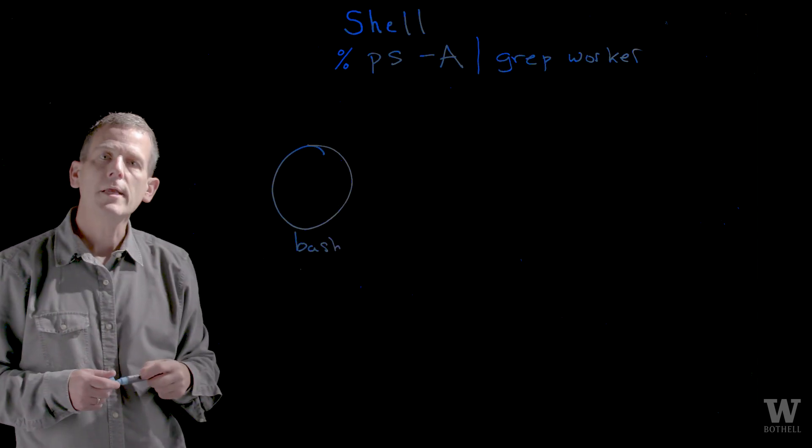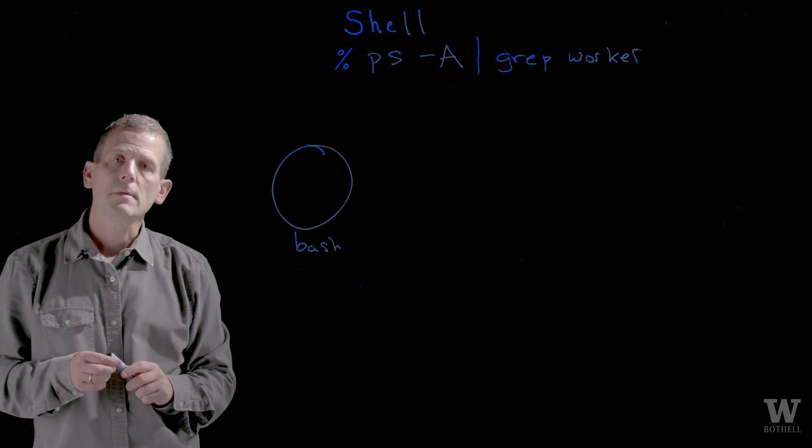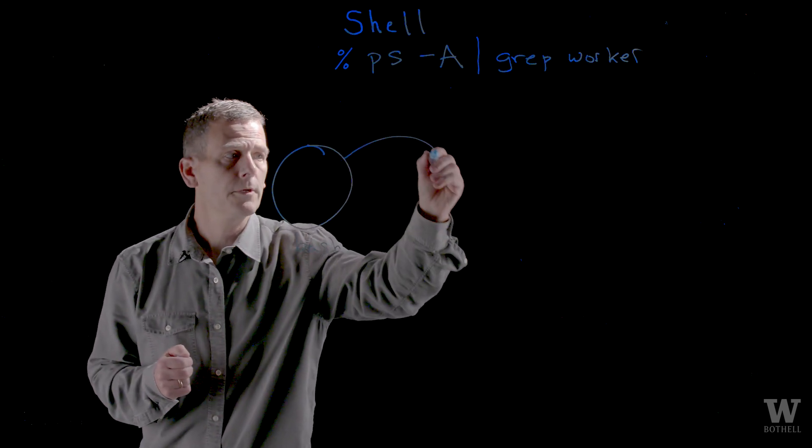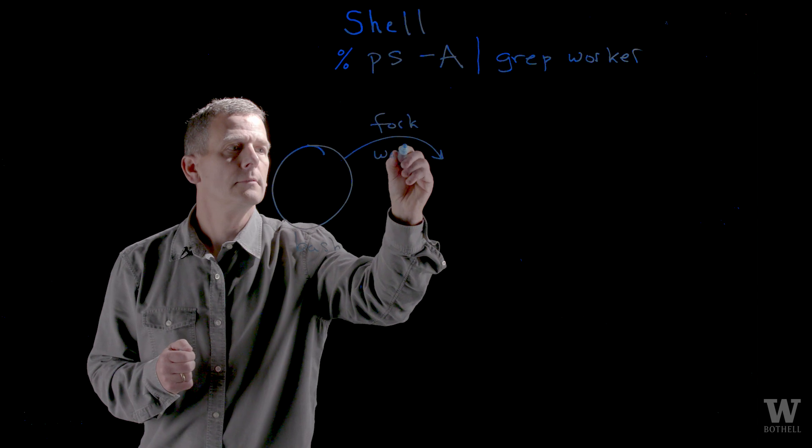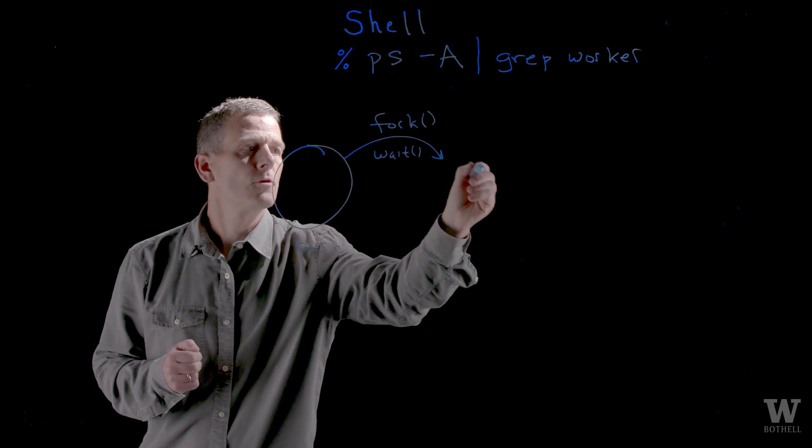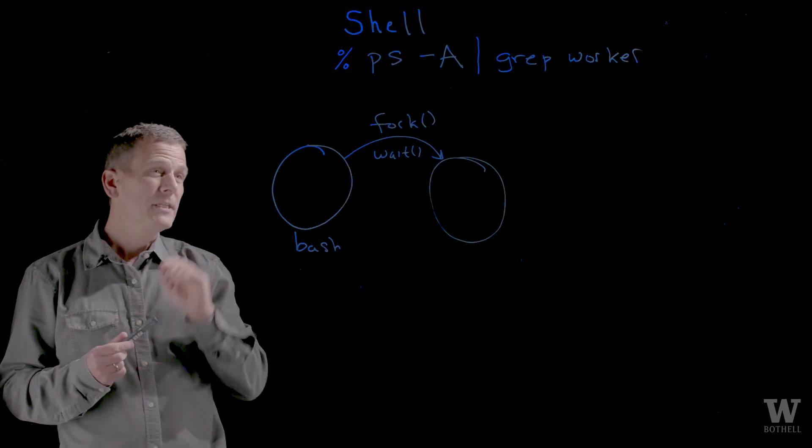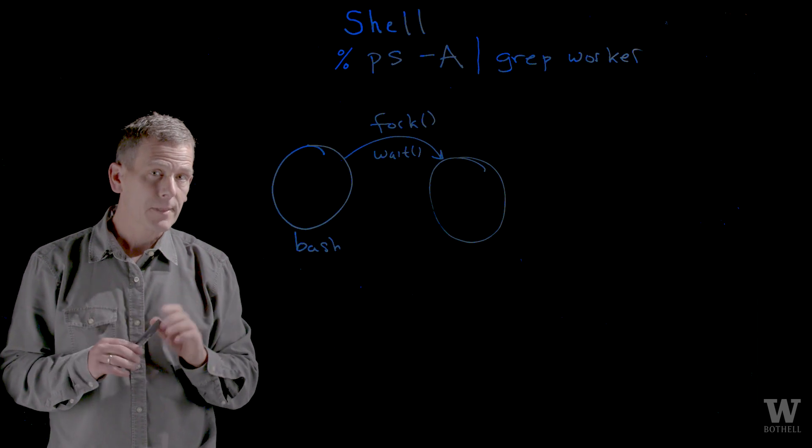Here's my shell waiting for the user to input the commands and you type in ps -a and pipe it to grep. The first thing Bash will do is do a fork and a wait creating a process where we can execute either the ps or the grep. You'll see that's the grep going to execute here because we need two processes, two completely independent processes.